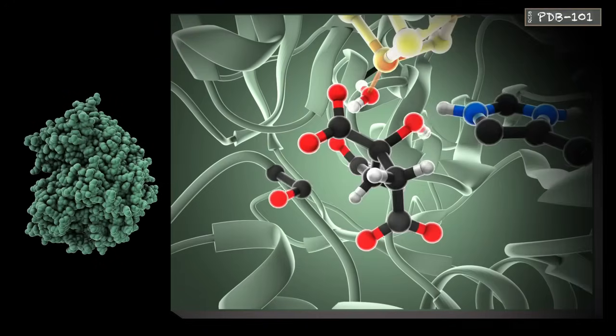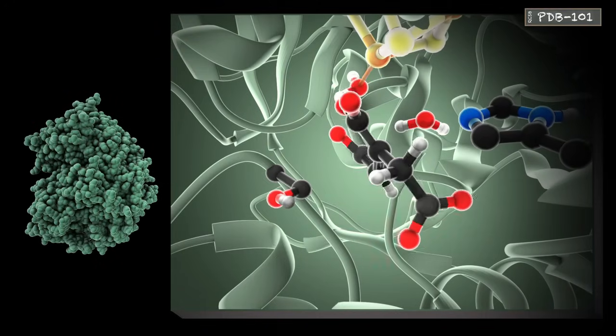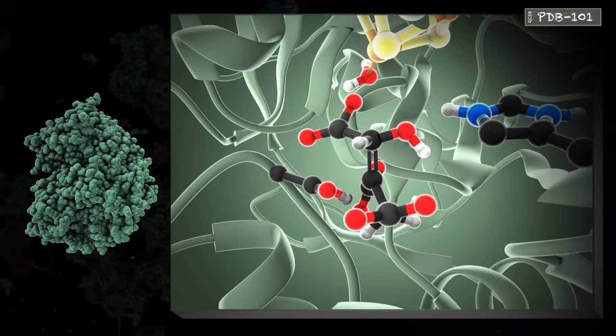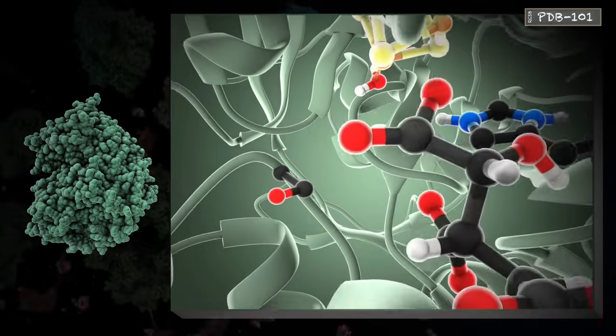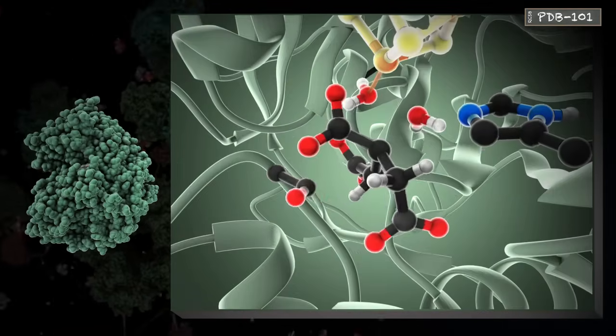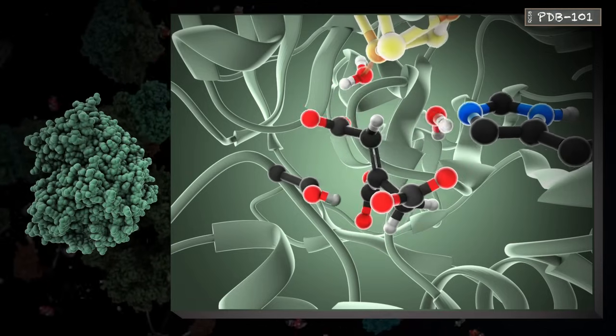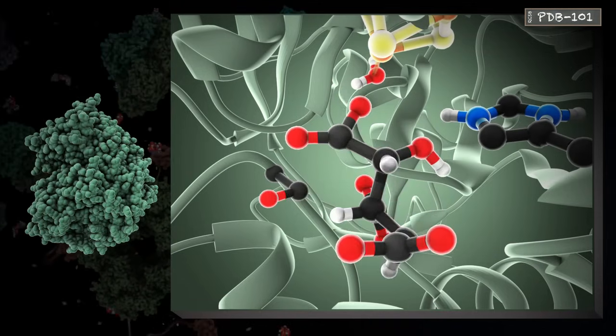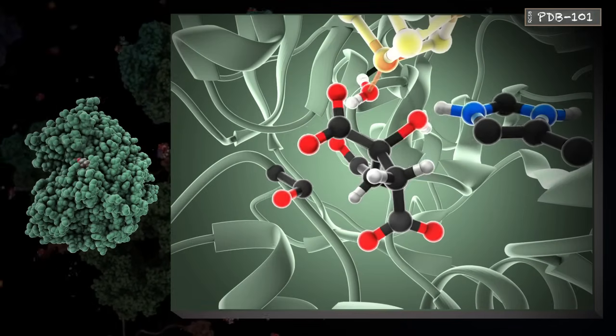Notice that the enzyme itself was not changed by the reaction. It extracted a hydroxyl group and a hydrogen atom, and then put them back, thus starting and ending in the same state. This is the hallmark of a catalyst. When it finishes a reaction, it is ready for the next, so it can perform thousands of reactions in a row.